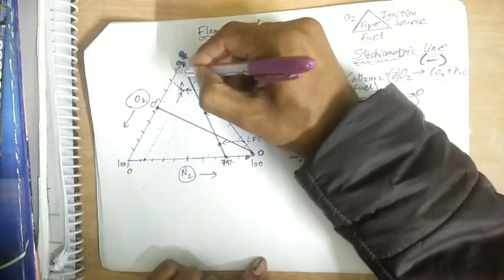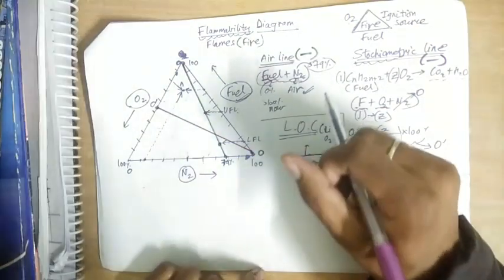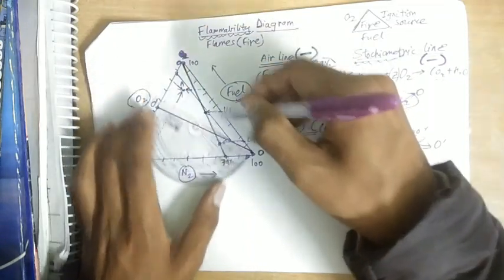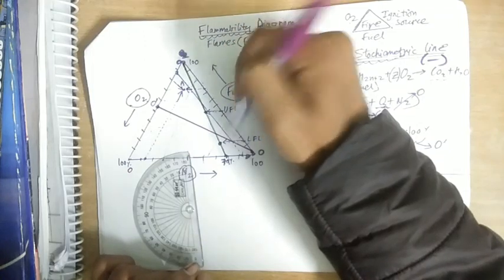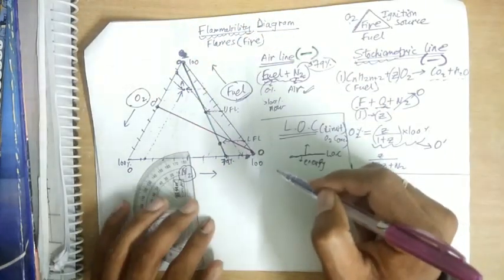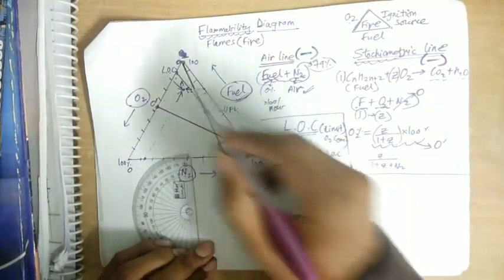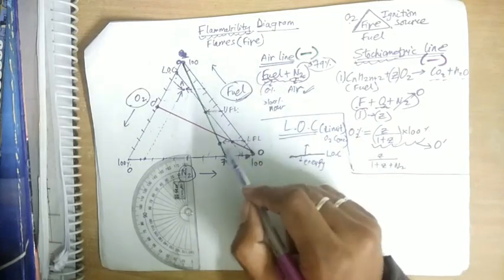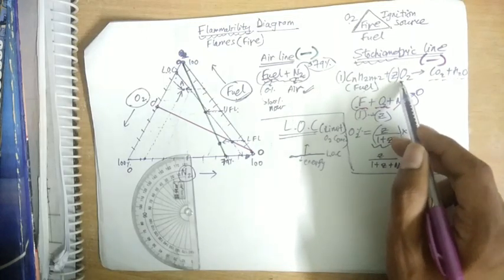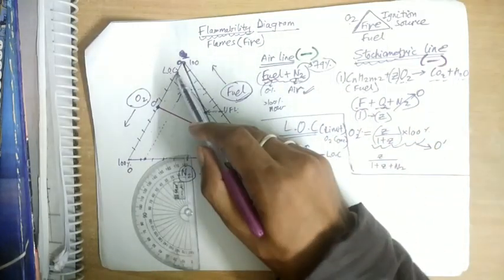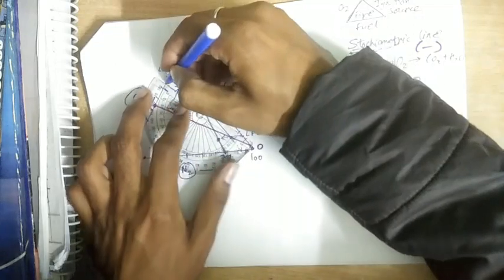The LOC is drawn as a horizontal line parallel to the fuel axis at a particular oxygen concentration. This LOC line intersects the stoichiometric line at a specific point — the nose point. Below the LOC, oxygen is insufficient for combustion; above it, fire can occur if fuel is also present. The stoichiometric line represents the required oxygen-to-fuel ratio, and the LOC represents the minimum oxygen needed for the mixture to heat up.